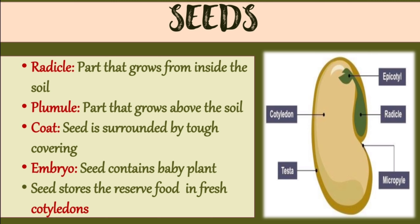Next is the embryo. The seed contains a baby plant which is known as the embryo. The seed also stores reserve food in the cotyledons. The upper middle part which you can see in the figure is the cotyledon.